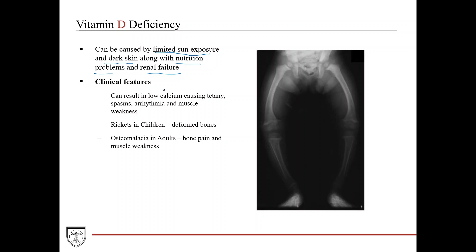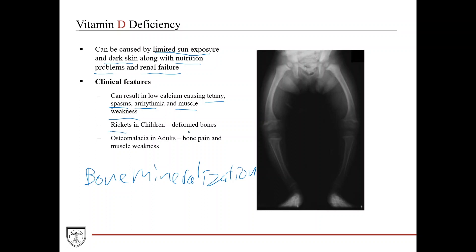Since vitamin D is critical for maintaining calcium levels, deficiency can cause hypocalcemia, resulting in tetany and muscle spasms — because calcium is essential for muscle contraction and for maintaining electrical gradients across membranes — as well as arrhythmias, nerve function issues, and muscle weakness. In children with severe vitamin D deficiency, you can see rickets: very weak, pliable, deformed bones with bowing of the legs, visible on X-ray. This is a high-yield image you may see on biochem or board exams.